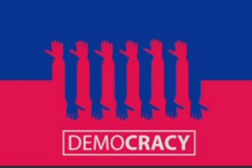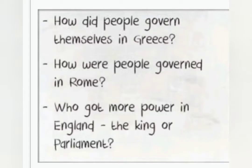Today we will learn about how democracy developed over the years from ancient times. Democracy is a form of government where people have the power to govern a country either directly or indirectly through elected representatives.